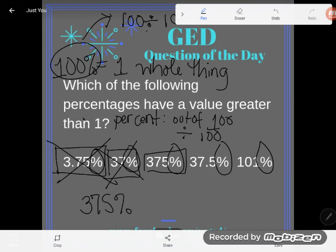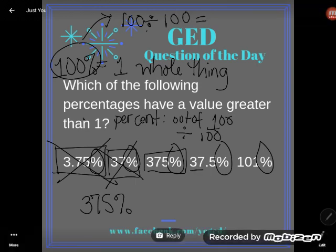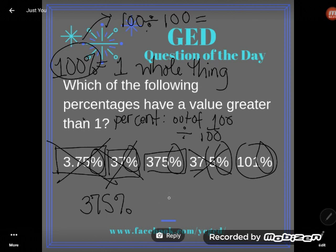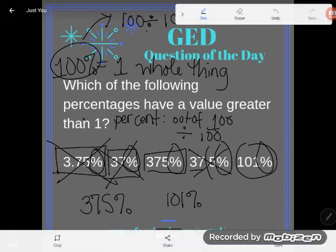So it is significantly higher than one. Again, don't get tricked with decimal points. This is 37 and some change, 37.5%. That is not bigger than a hundred, but a hundred and one percent sure is just a smidge higher than a hundred percent. So it's just a little bigger than one. All right. So the two answers here are 375% and 101%.